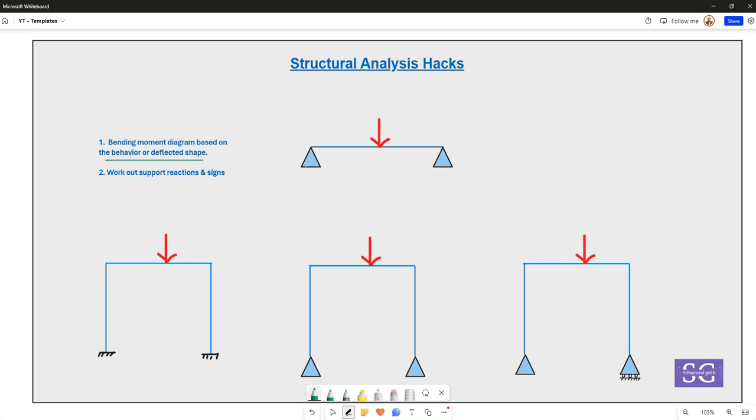Based on the deflected shape, one can guess that it will have zero moment at the support since these are pinned supports, and it will have maximum moment at the mid-span. So the bending moment diagram will look something like this.